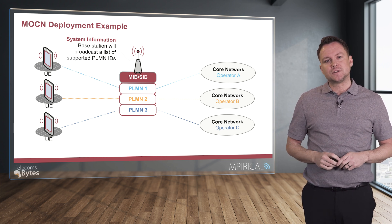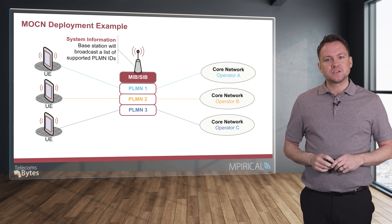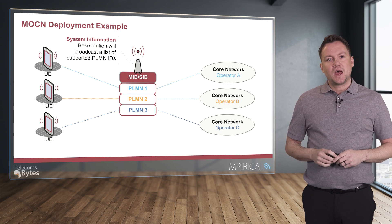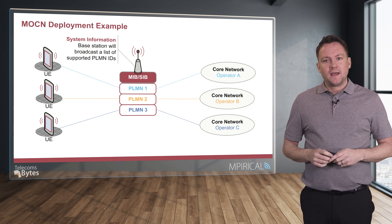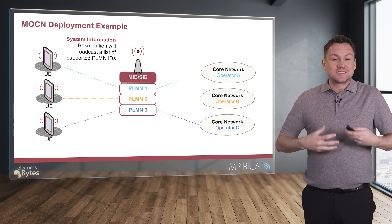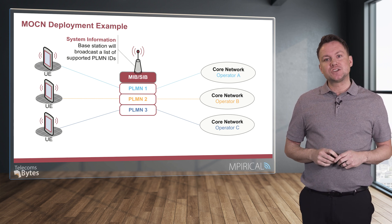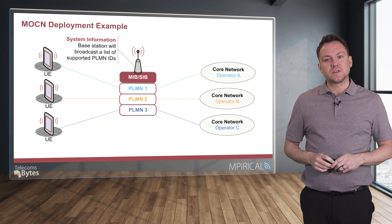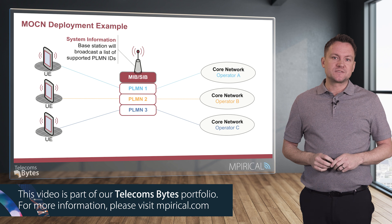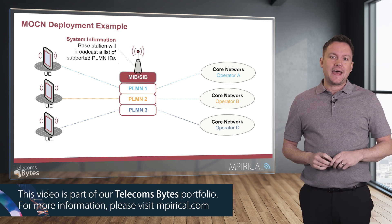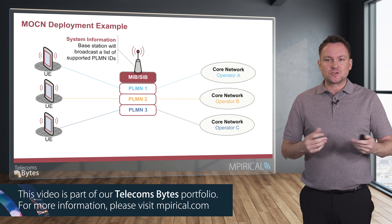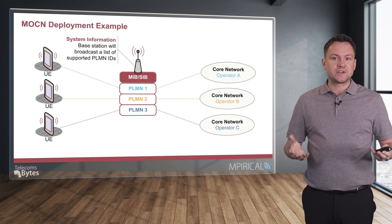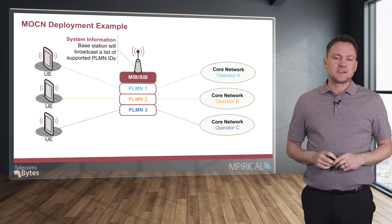For 5G and future generations, we can expect to see much greater use of higher frequencies, which don't propagate as far and thus require a quite dense network. This is the idea of cell densification, where we need a greater density of cells and will see a multitude of different small cell deployments — for example, in a city environment where small cells might be deployed as part of street furniture such as street lamps and signs.